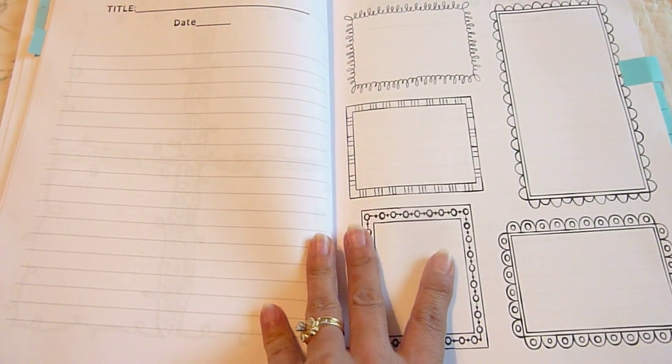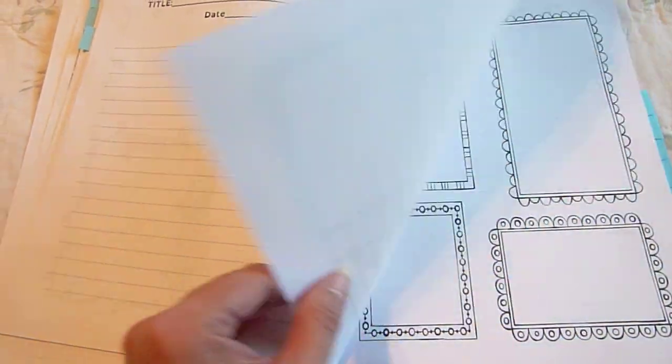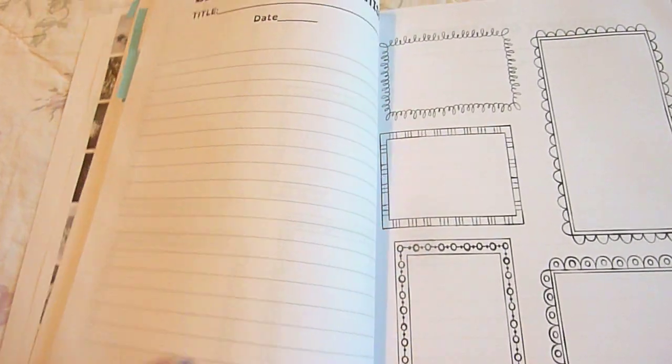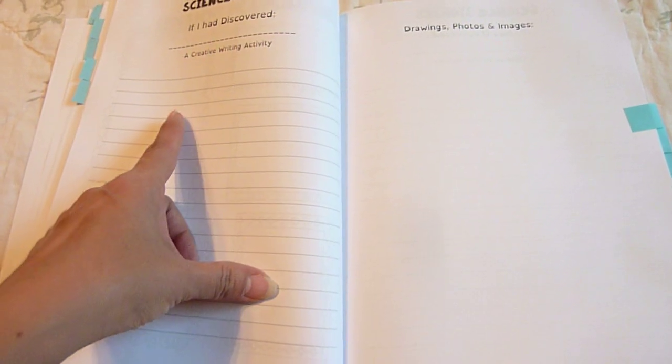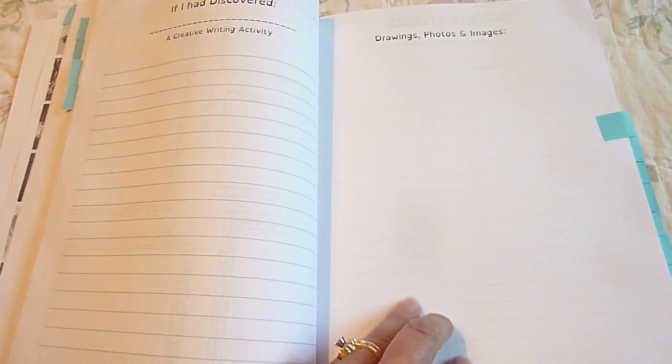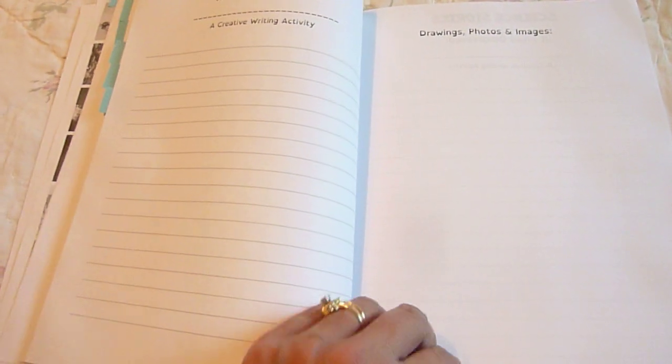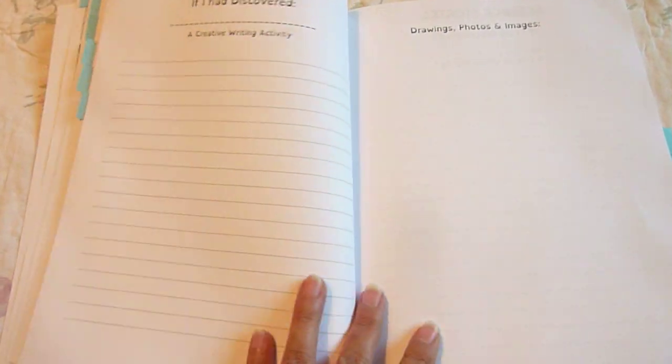The next one is Biography of a Scientist. Title and Date. Here are some of these. Science Stories. If I had discovered a creative writing activity. Drawings, photos, or images. So they can get creative there.